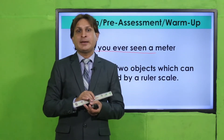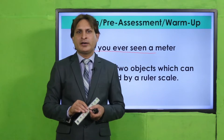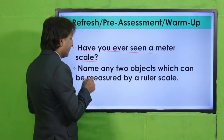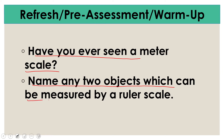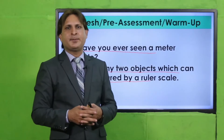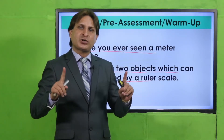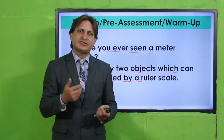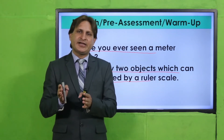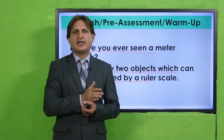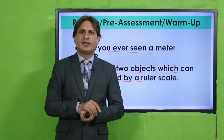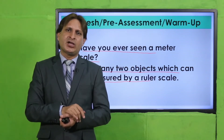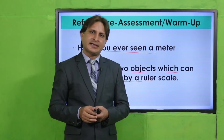Meter scale one meter long hota hai, jisko hum log long lengths measure karne ke liye use karte hain. Students, name any two objects which can be measured by the meter scale. Aise koi bhi do objects aap observe karein. Har student ne apni notebook ke upar ek list banani hai — aapne observe karna hai classroom mein kaun si aisi cheezein hain jinko aap meter scale ke saath measure kar sakte hain — aur wo list teacher ko dikhani hai.